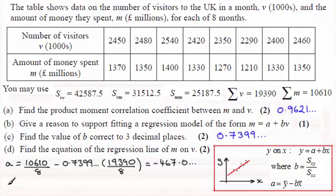And so we're now in a position to work out the regression line for M on V. So if we just put an intro here, we could say therefore M on V, it's just going to be M equals, and then we've got A.